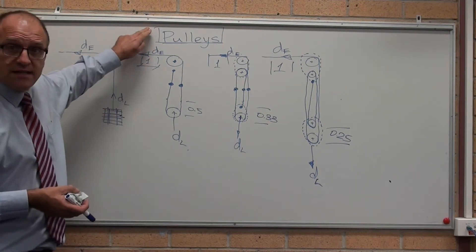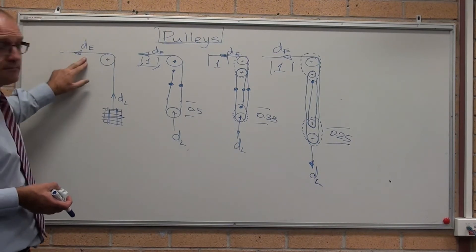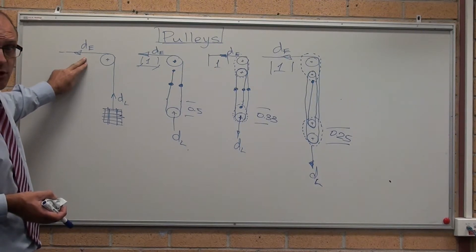The fourth machine we're looking at is pulley systems. This is a machine because it's changing the direction of the applied force.